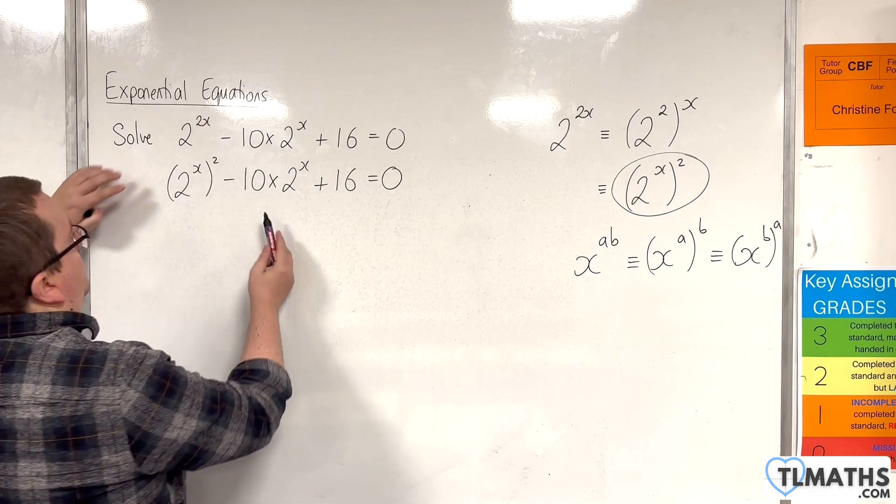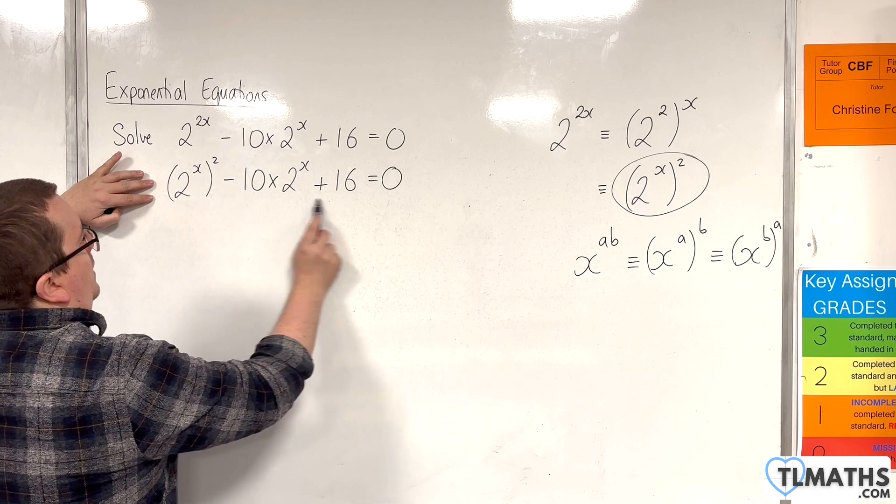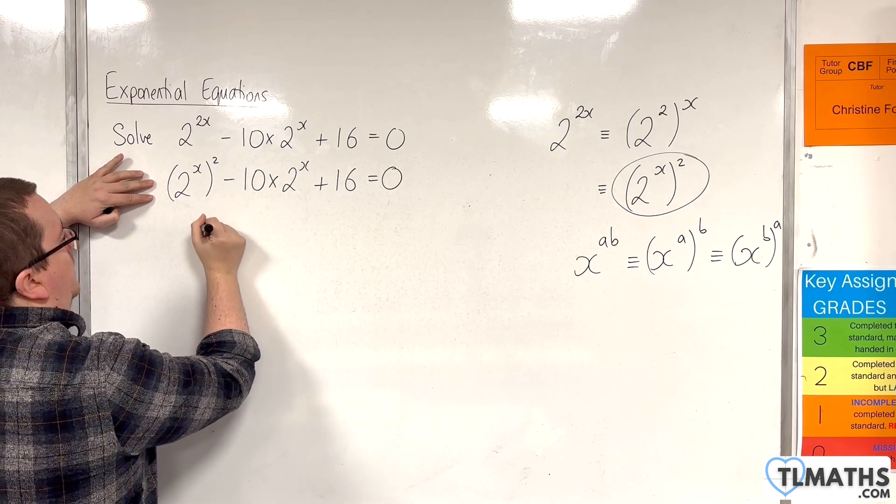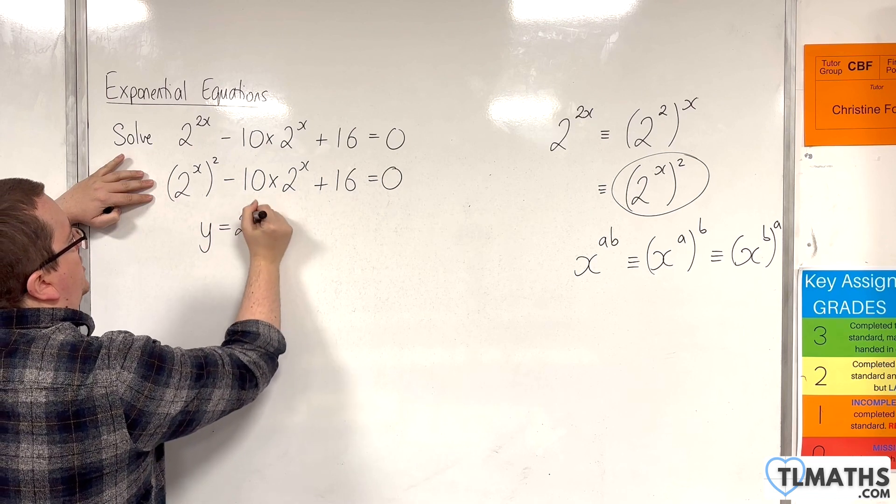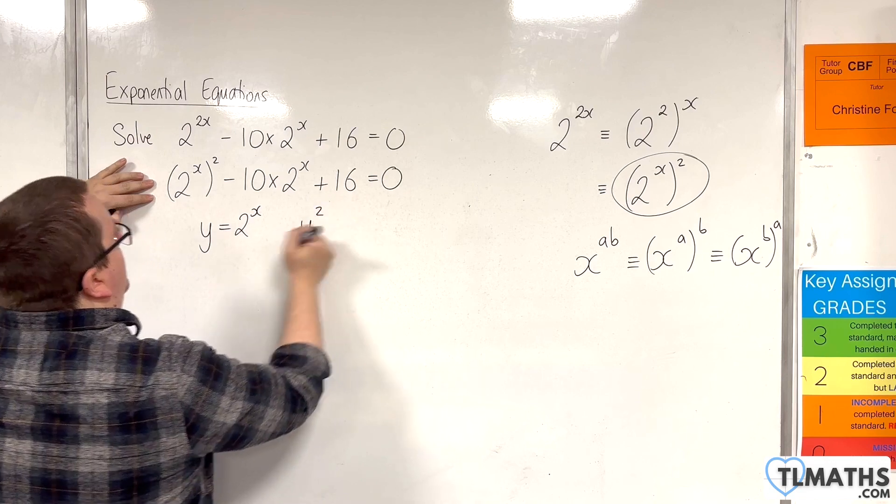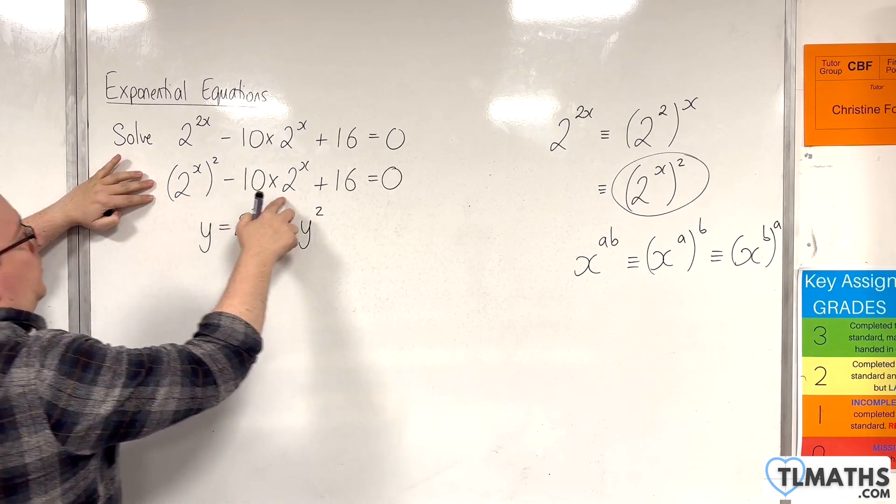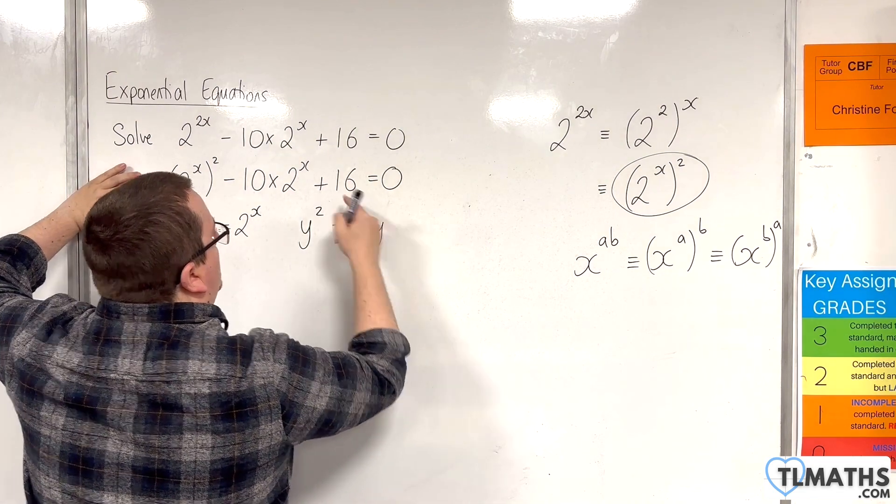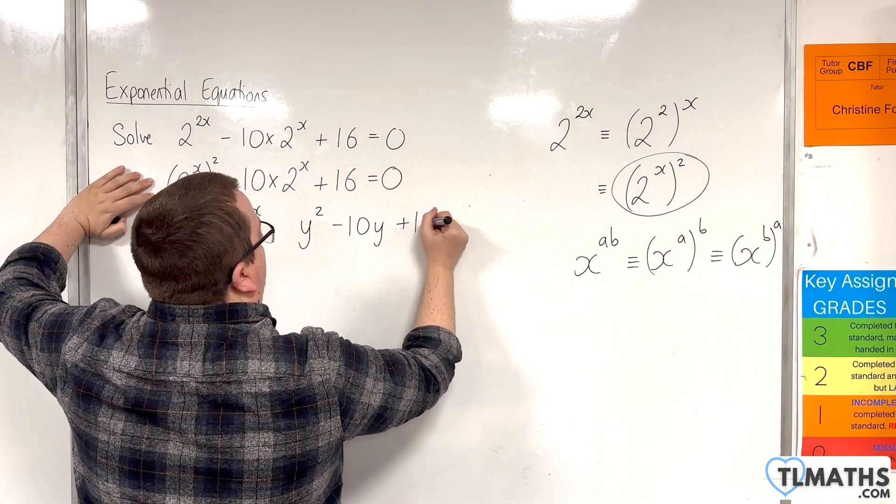But I personally like to jump straight to the answer and skip these bits of working out if we can. What we do is we replace the 2 to the x with y. So we're going to let y be 2 to the x. So here you would have y squared, then take away 10 lots of y, plus 16 is 0.